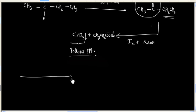In this lecture we discussed the mechanism of the Iodoform reaction. This reaction occurs because of the acidity of alpha-hydrogen, and there are only two steps that get repeated three times: first, an acid-base reaction, and next, an electrophilic-nucleophilic reaction. The Iodoform reaction is also given by alcohols that can be oxidized to methyl ketones, since I2 plus NaOH is a mild oxidizing agent.